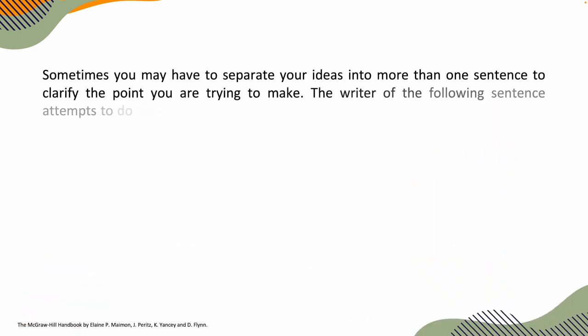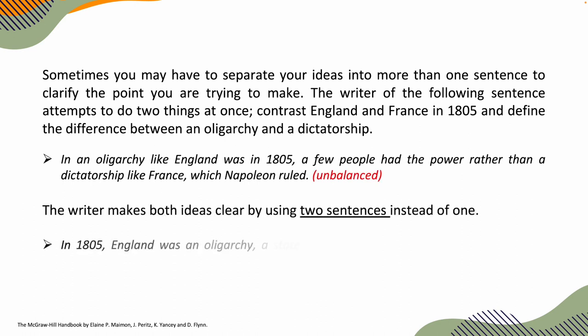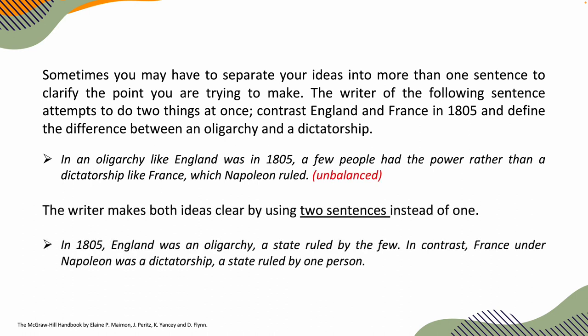Sometimes you may have to separate your ideas into more than one sentence to clarify the point you are trying to make. The writer of the following sentence attempts to do two things at once: 'In an oligarchy like England was in 1805, a few people had the power rather than a dictatorship like France, which Napoleon ruled.' This is totally unbalanced.